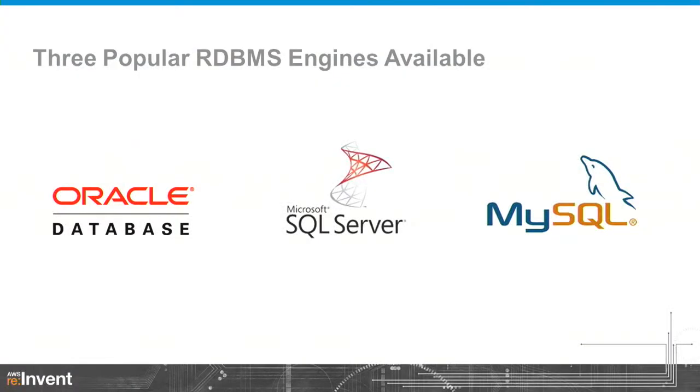We now have the four most popular database engines available on RDS — I'm missing one logo on this slide, which is Postgres, announced today. This covers pretty much 99% of all enterprise application needs, whether it's PeopleSoft, JD Edwards, or Siebel — powered by Oracle RDS or SQL Server RDS. For open-source enterprise-class applications like SugarCRM or Alfresco, MySQL or Postgres covers those as well.